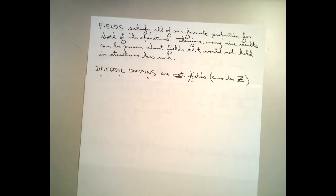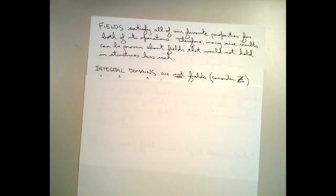Integral domains, on the other hand, are not fields. Consider the example of the integers: the integers are not a field because fields require that every element has a multiplicative inverse, since the multiplicative structure is an abelian group on the non-zero elements. But in the integers, the only elements with multiplicative inverses are one and negative one. For example, two does not have a multiplicative inverse — if it did, the multiplicative inverse would be one half, and that element is not a member of the integers. But it turns out that integral domains are almost as nice as fields; they do satisfy many, many of the properties that fields do.